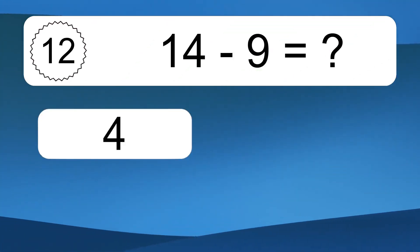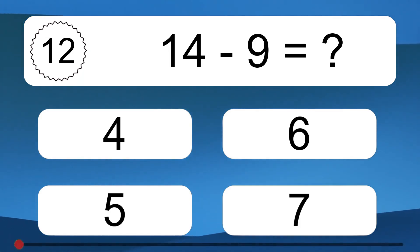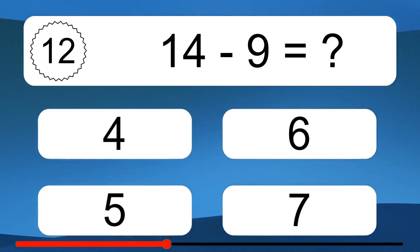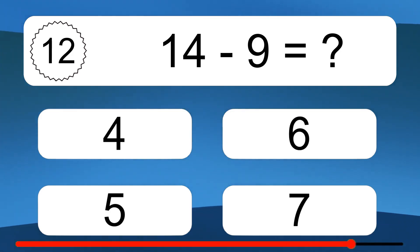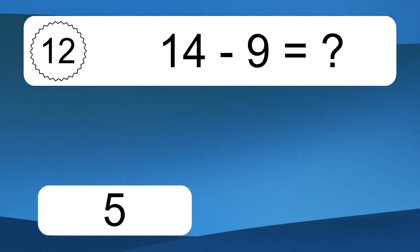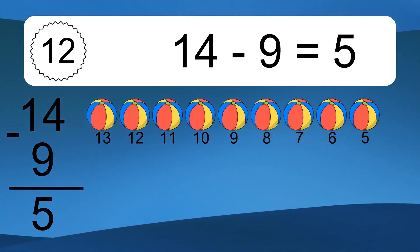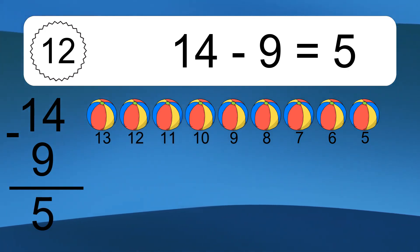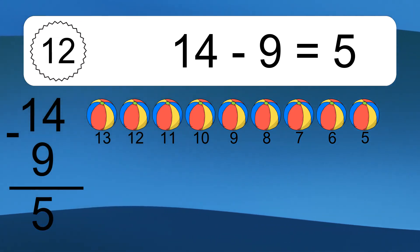14 minus 9 equals what? 14 minus 9 equals 5. Let's count it. 13, 12, 11, 10, 9, 8, 7, 6, 5.